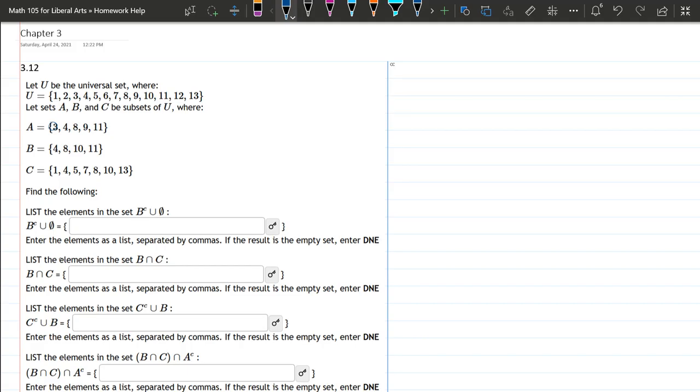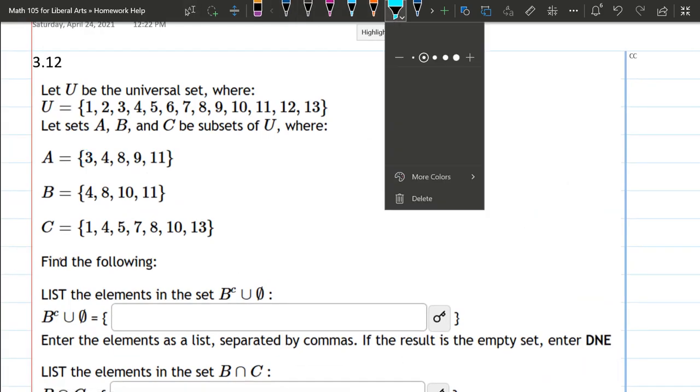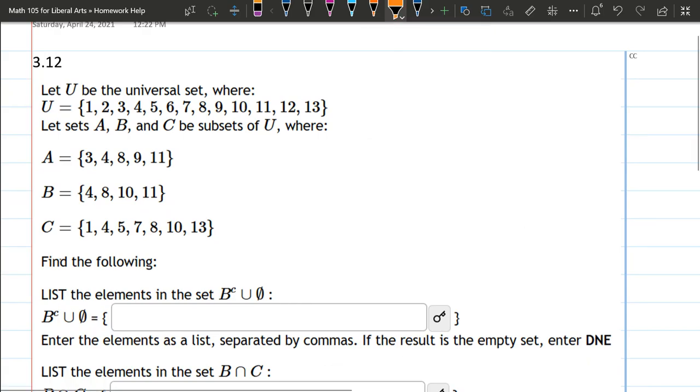In this problem we have a universal set and three sets A, B, and C. Before we get started on drawing these out, we're going to analyze these elements for a minute. The set U is the numbers 1 through 13, including 1 and 13.